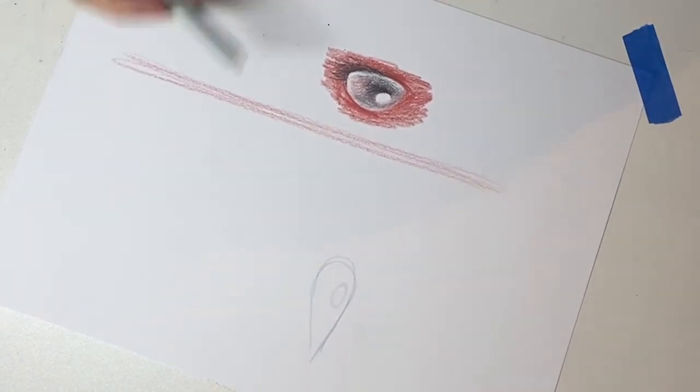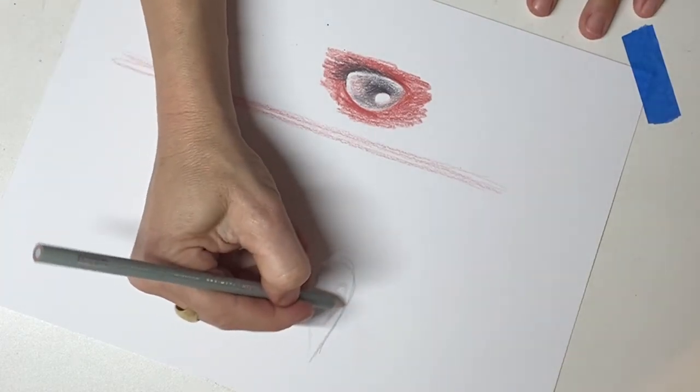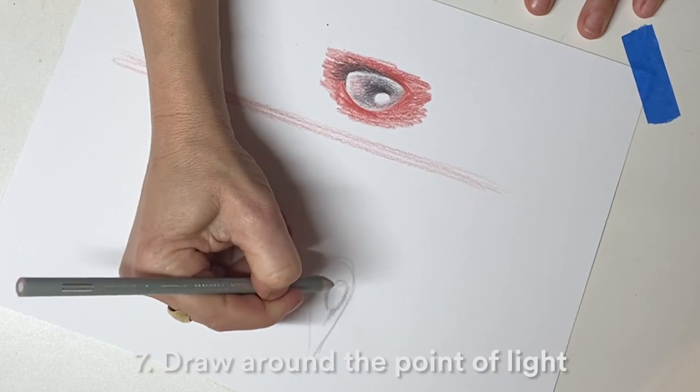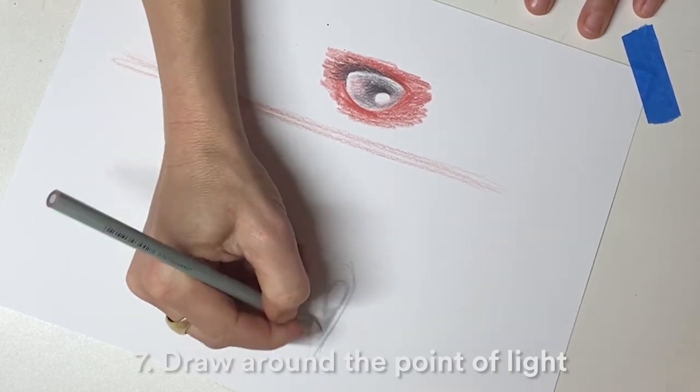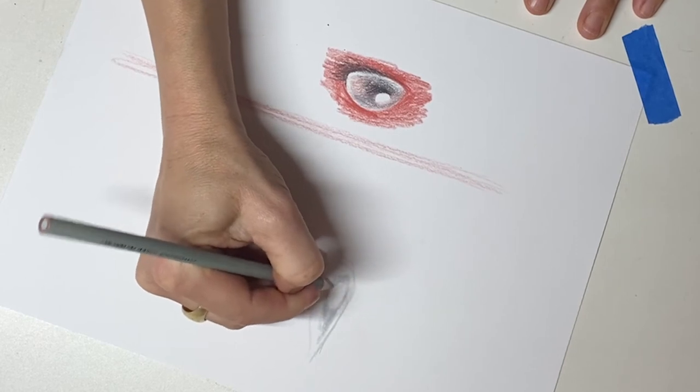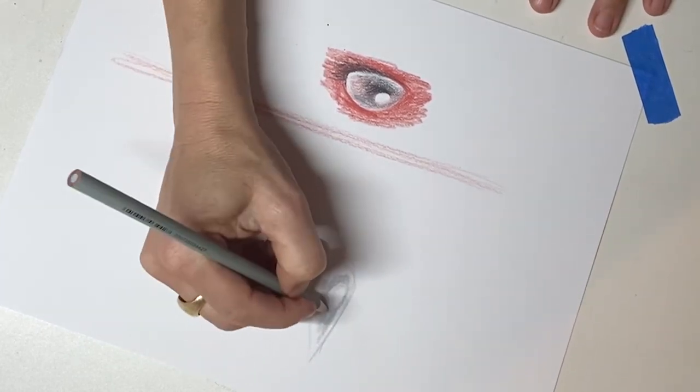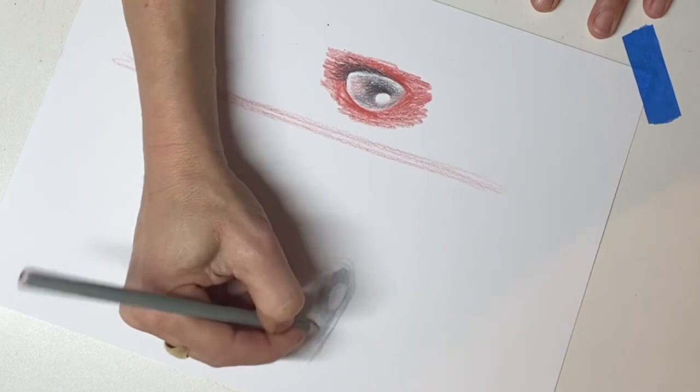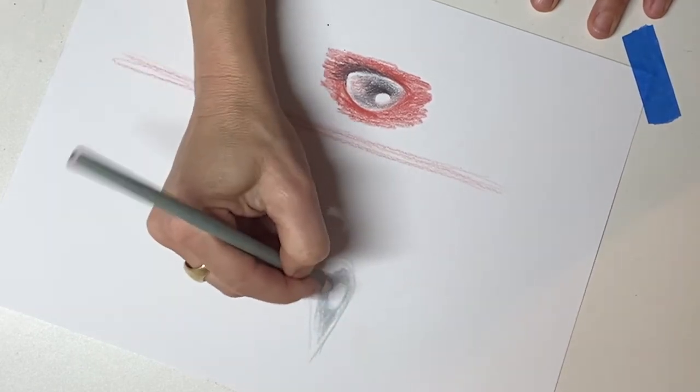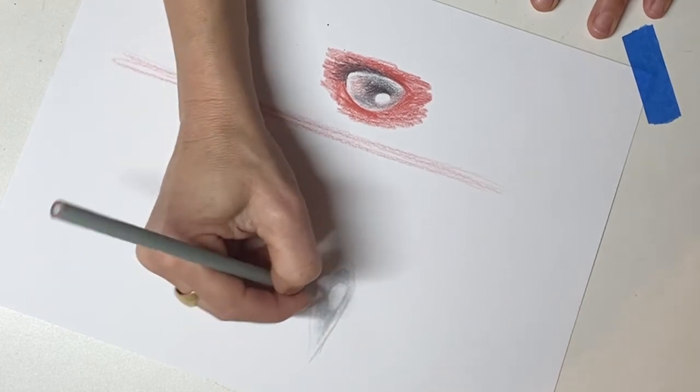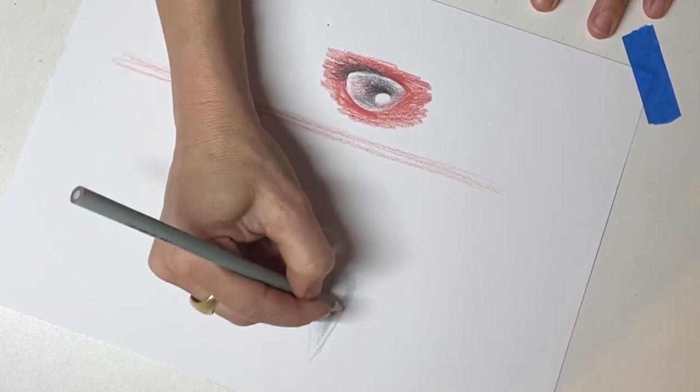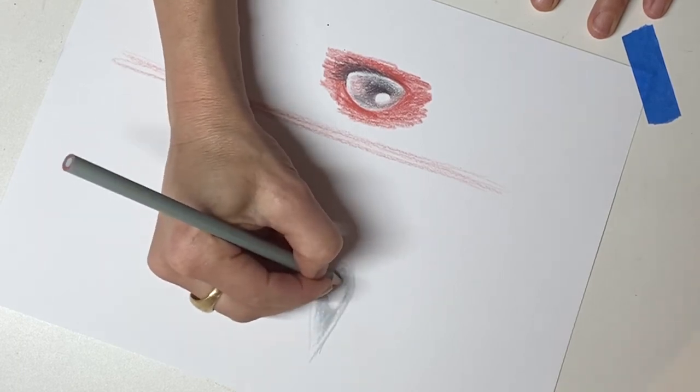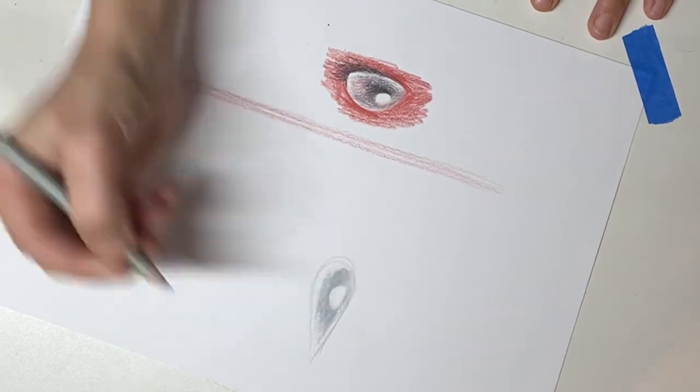And then this one, I'm going to start with this lighter color around the point of light. Sorry if my hair is getting in there. So that's the color around here. And it's more up there.